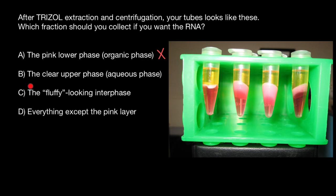Then, for example, variant C, the fluffy looking interphase, which we can find here in each sample. This phase contains DNA. So also wrong choice for us.